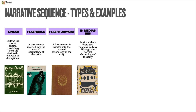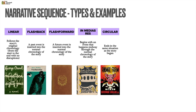In medias res begins with an event midway through the normal chronology, cutting straight into a moment without setting or explanation — as in Mrs. Dalloway by Virginia Woolf, which opens with Clarissa Dalloway's morning buying flowers in London. A circular narrative ends the same way it began — in Animal Farm, the animals start in captivity under Mr. Jones, revolt, but ultimately end in the same captivity, this time under Napoleon the pig, in collaboration with humans.